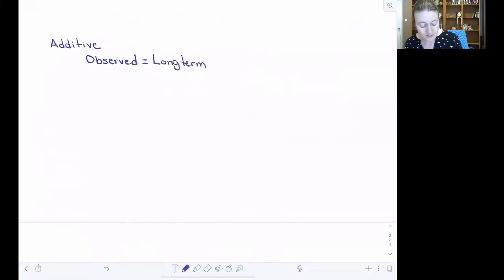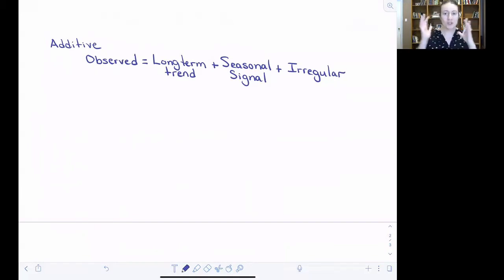That approach that we've just outlined is called the additive approach for removing that seasonal signal. And it's based on a model for how your long-term, your seasonal, and your irregular fluctuations combine to generate your observed data. And that model is this: that your observed value is generated by the sum of your long-term trend, your seasonal signal, and then anything else that is bumping your time series around that's not part of these more predictable long-term and seasonal signals.